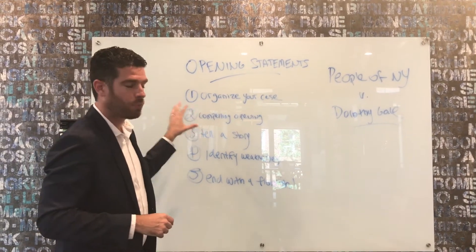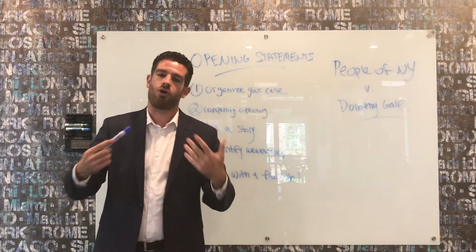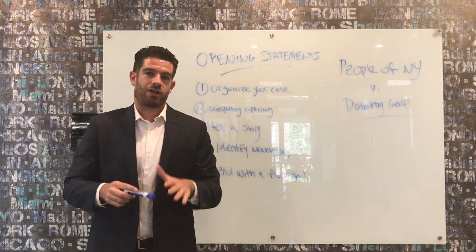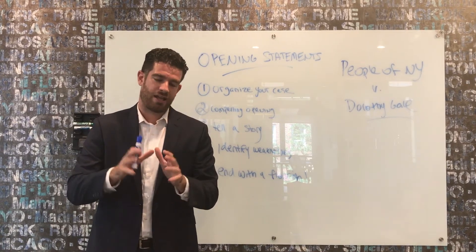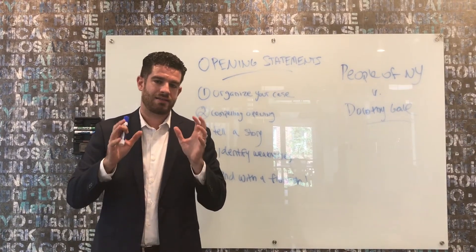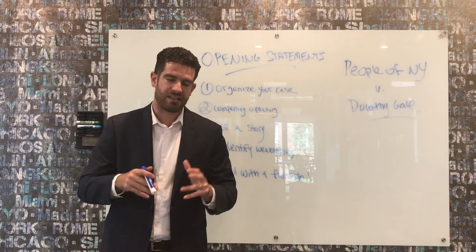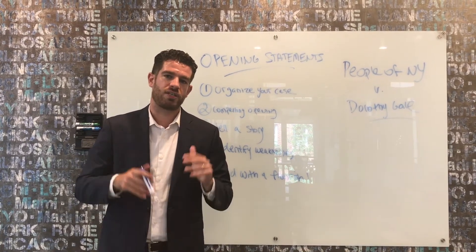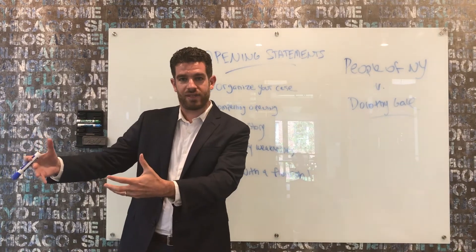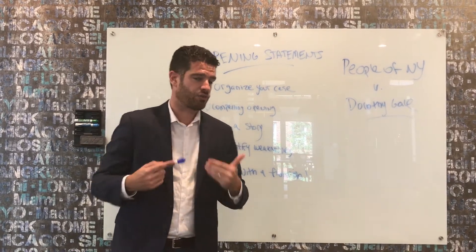The next important point is to start off in a really compelling way. You've all heard of the concept of primacy and recency. Nowadays people don't have very long attention spans, and juries certainly don't. You want to grab their attention from the very beginning with a compelling impact statement. For example: 'Over the course of this case, we're going to prove to you that Dorothy Gale took justice into her own hands — when she meted out her own brand of justice, killing the Wicked Witch of the West.' That's how you grab a jury's attention from the get-go, while also establishing your theme.